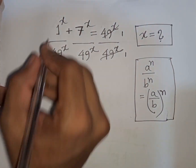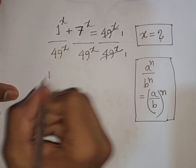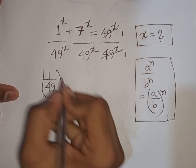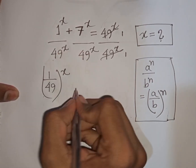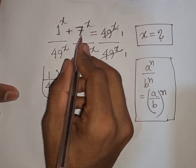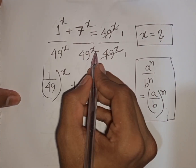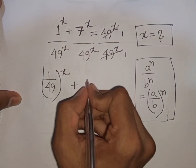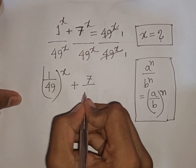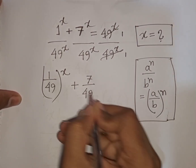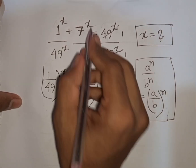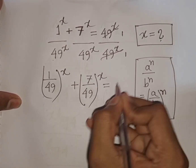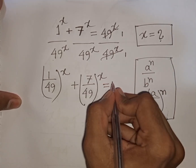According to this rule we can write (1 over 49) bracket to the power x, plus again, same power x but different base. According to this formula we write (7 over 49) bracket to the power x, which equals 1 divided by 1, that means it equals 1.